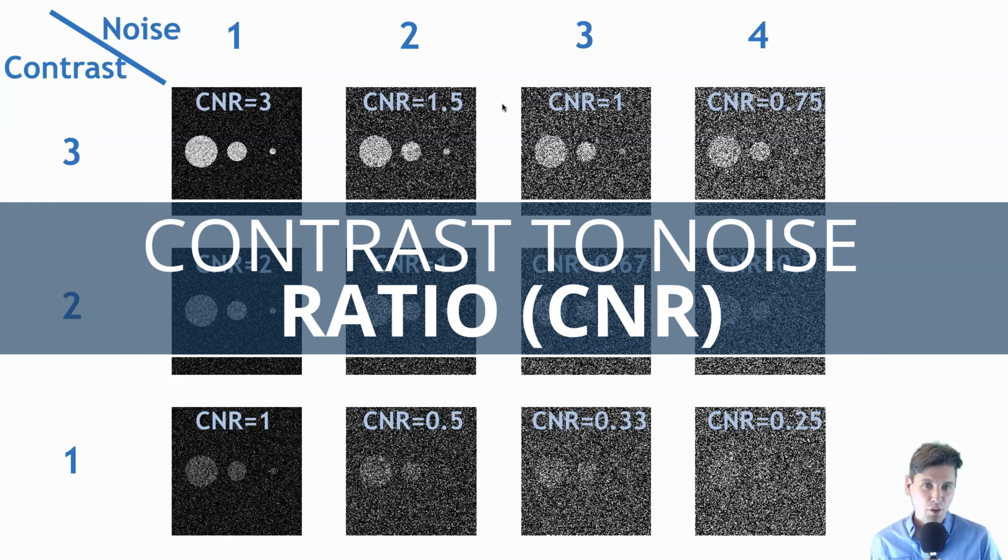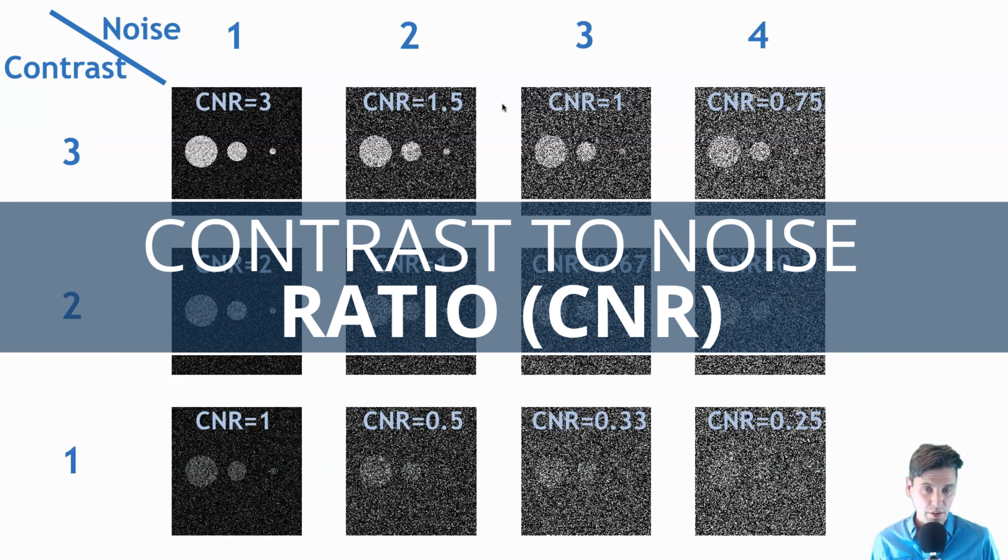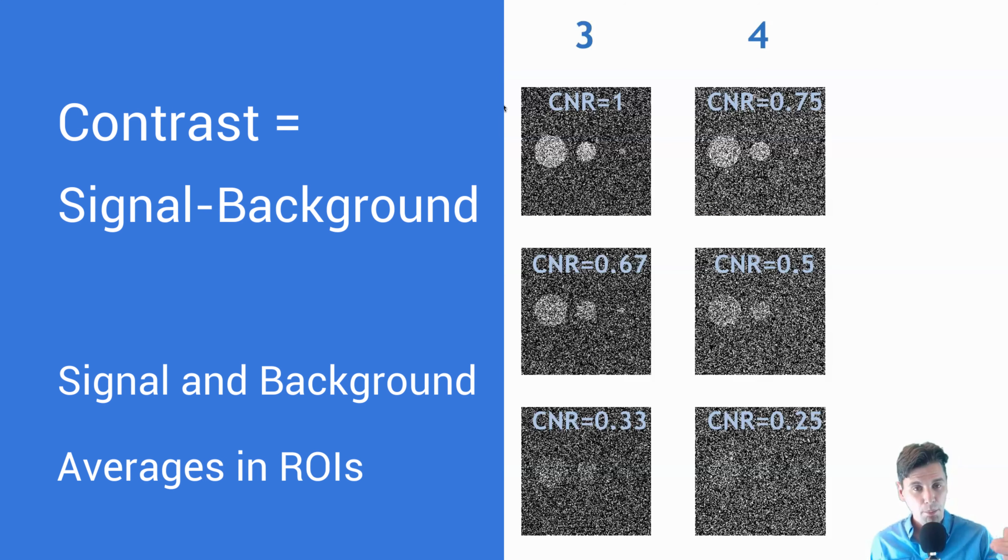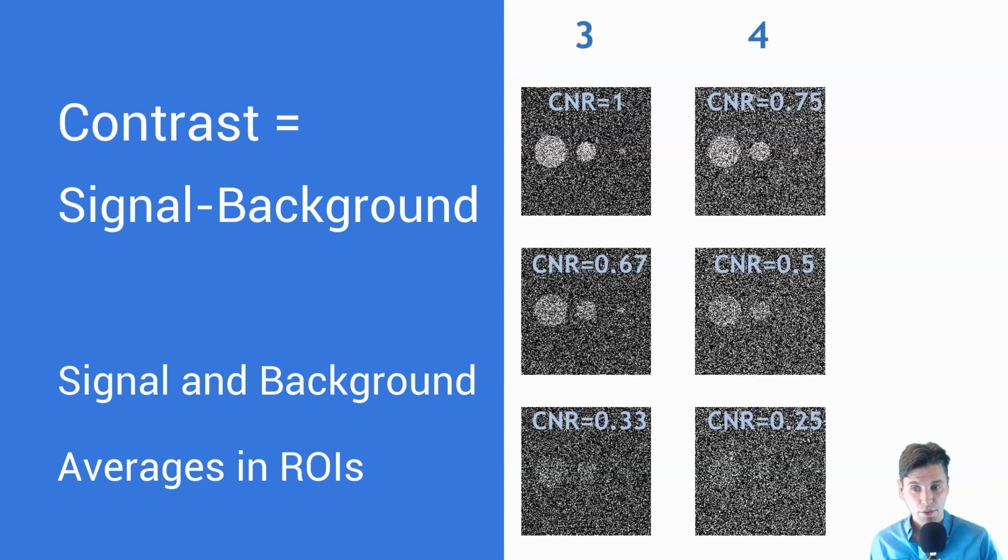So first we want to talk about contrast and noise. We've talked briefly in other posts about contrast. Contrast is the signal level of a given region above the background.